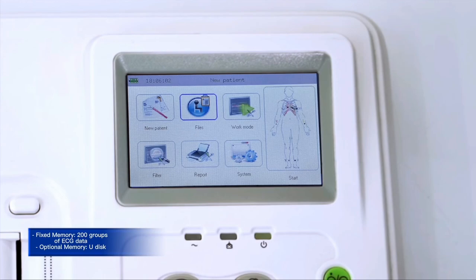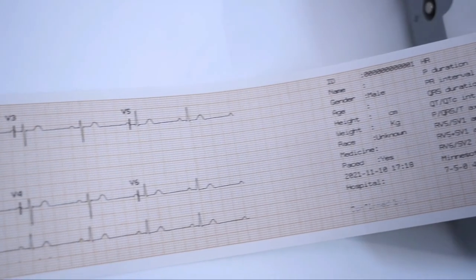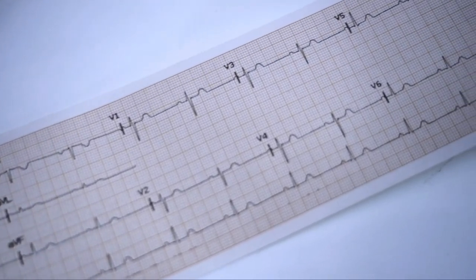E30 has fixed internal memory for 200 groups of ECG data. It can review, edit, record, delete, or transmit patient data in file management window. Press files in main menu to enter file management interface to view the desired report. Thank you for watching, Biolight Meditech.